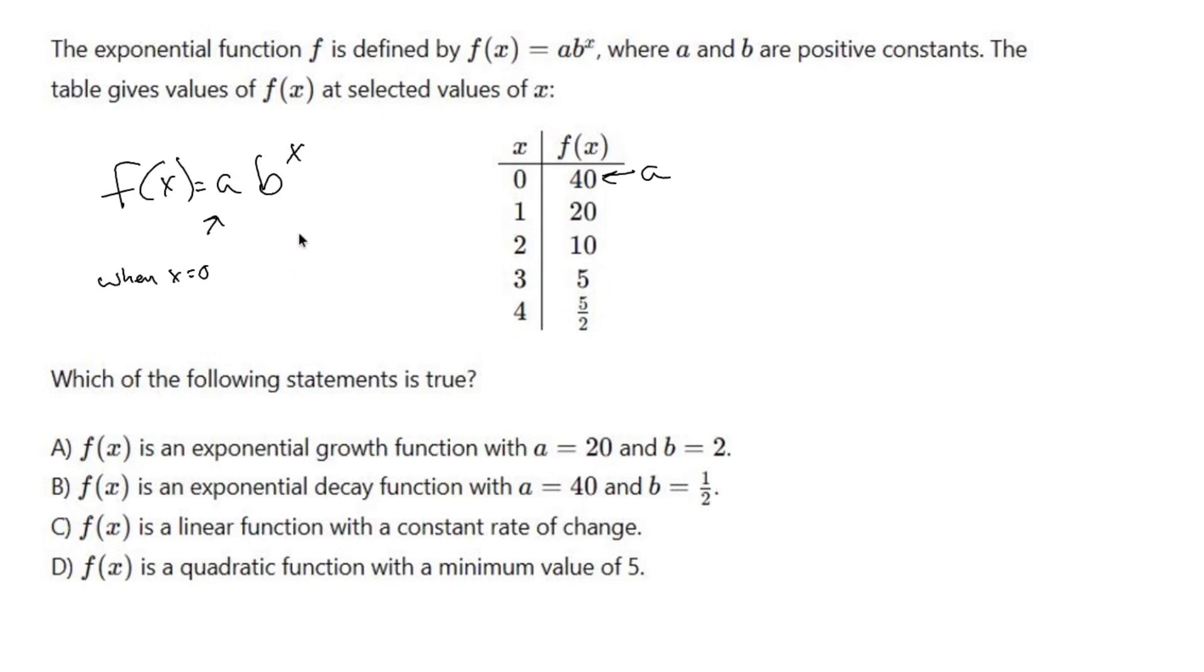Now b is basically the common ratio - in other words, what you do to get from one term to the next. In this case, the way we get from 40 to 20 to 10 to 5 to 5 over 2 is we divide by 2, or better yet, multiply by a half. So b is going to be one half.